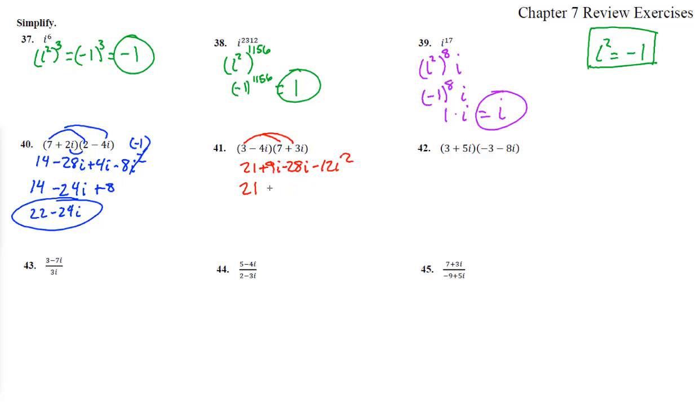Minus 9 and a plus 28, so minus 19i. And this is minus 12. Remember, i squared is a negative 1. So this is actually a plus 12. So 21 plus 12 is 33 minus 19i. Excellent.